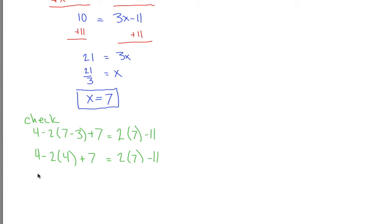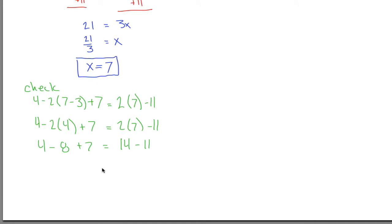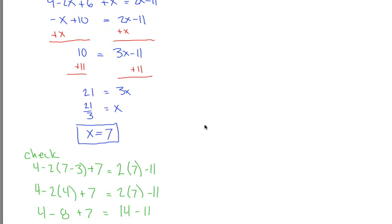2 times 4 is 8. So what I have over here is 4 minus 8 plus 7. On this side, 2 times 7 is 14. So I have 14 minus 11. And to see if they're the same, let's see. 8 plus 7 is 15. Nope, that's not true. 4 plus 7 is 11. Minus 8 gives you positive 3. 14 minus 11, that also gives you positive 3. It looks like this does check. x equals 7. We did everything perfectly.